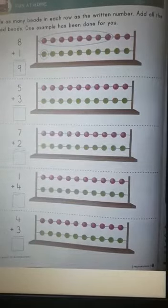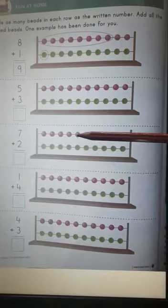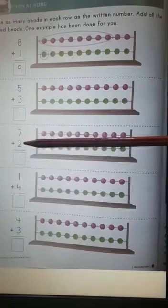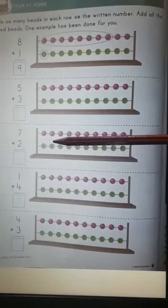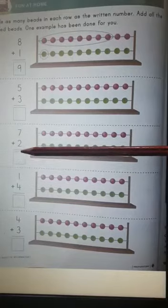So how many beads you will circle? 7. Right. 1, 2, 3, 4, 5, 6, 7. You will circle 7 beads. Plus 2. You will circle 2 beads. Now 7, 8, 9. Answer will be 9.